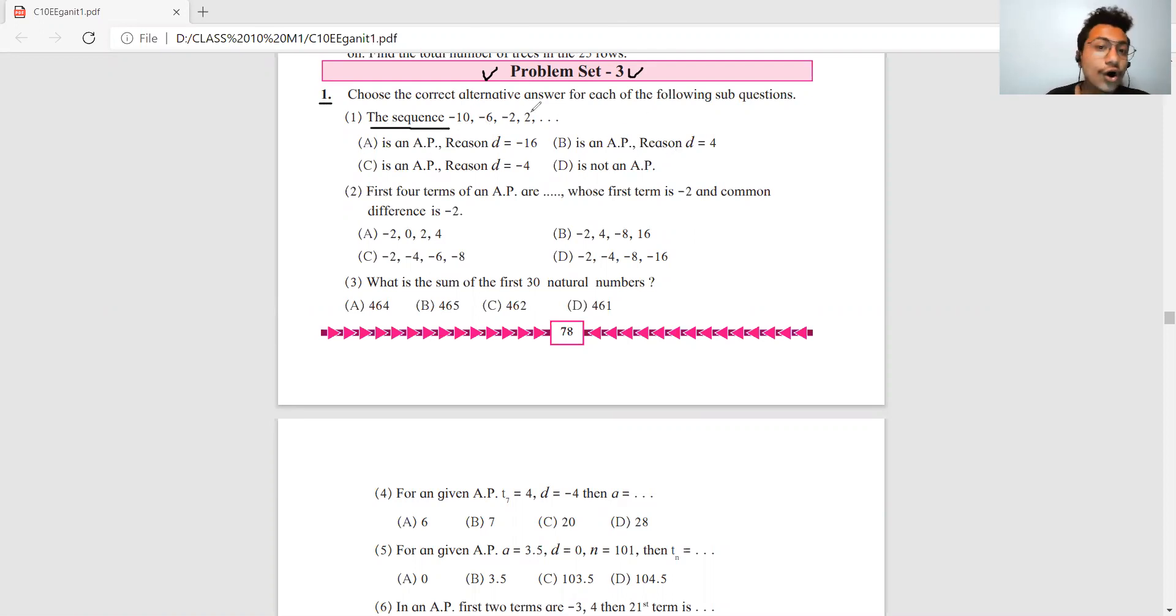Find out if it's an AP or not. The formula for d is T2 minus T1. Apply the formula with values: -6 minus -10 equals -6 plus 10, so your answer is 4. Next is -2 minus -6, which equals -2 plus 6, which is 4. Common difference is 4, so the given sequence is an AP. The answer is option A.